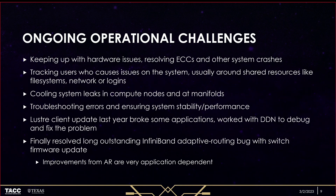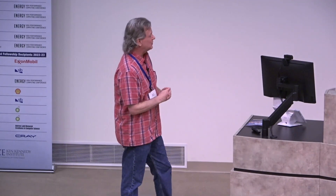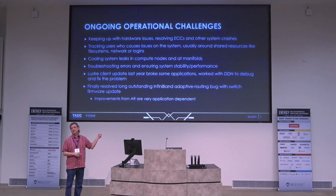Our usual operational challenges: we've had fewer file system interruptions this past year due to users doing bad things. Almost always when something happens on the file system, it's usually some user doing something bad. The bigger issue I want to spend a few minutes on is the cooling system leaks. The system was supposed to be designed with zero leaks, but unfortunately we had some bad seals manufactured on some of our cooling blocks. We've had to replace about 500 out of the original 8,000 nodes so far.